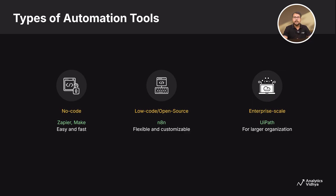Now that we understand the benefits of automation tools, let's consider the different types. Primarily, there are three types of automation tools: first, no-code tools; then, low-code tools; and thirdly, enterprise-scale tools.